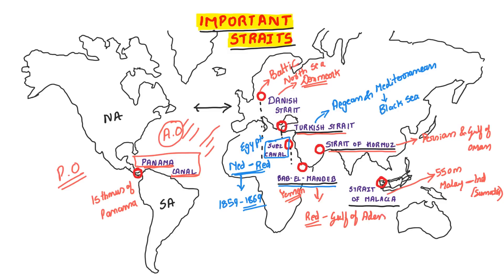This is the Java Strait. This is the North and South location, and this is the East and West location.